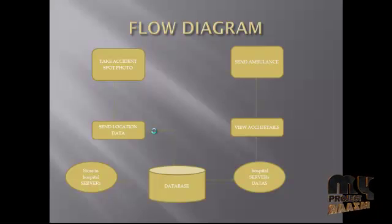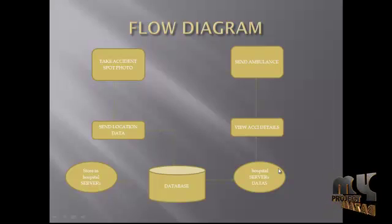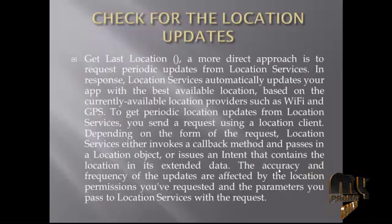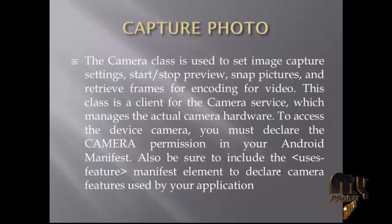In this application, we have different modules and three methods to find the user's accident spot. We can connect different modules to perform the accident tracking. The first module is the capture photo module. This module is used to capture images and send them to the online server. The captured photo should be placed in the image view, and finally the image view character will be placed accordingly.